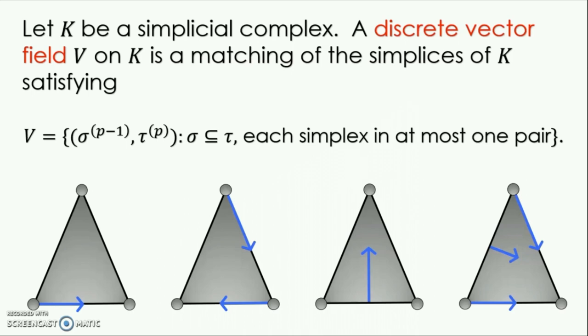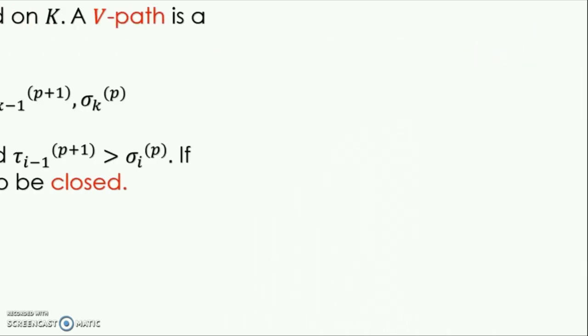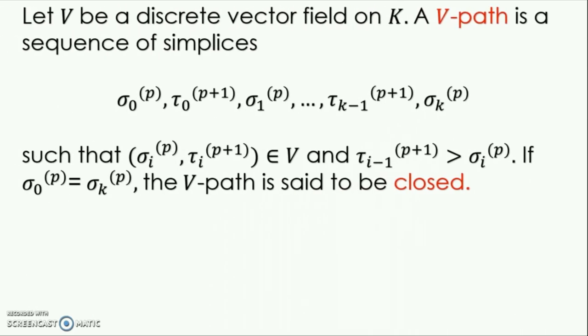In addition, there is another condition that we will require. A V-path is a sequence of simplices in a discrete vector field that forms a closed loop. An example will illustrate this. The following discrete vector field is a closed V-path because if I start at any vertex and follow the arrows, I will end up at that same vertex.